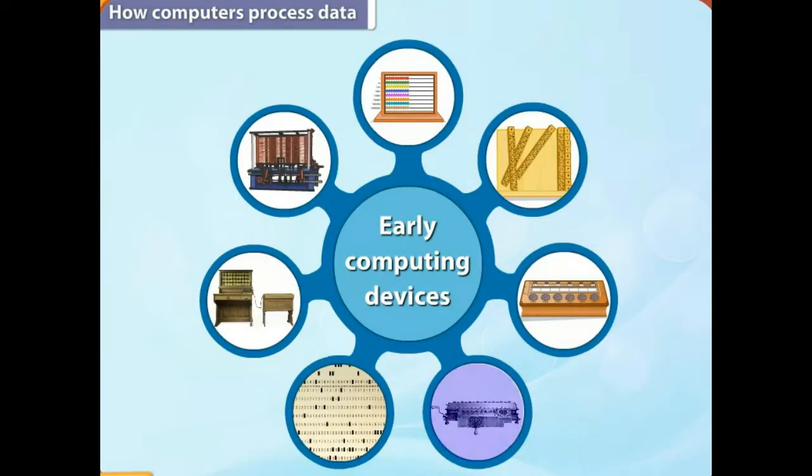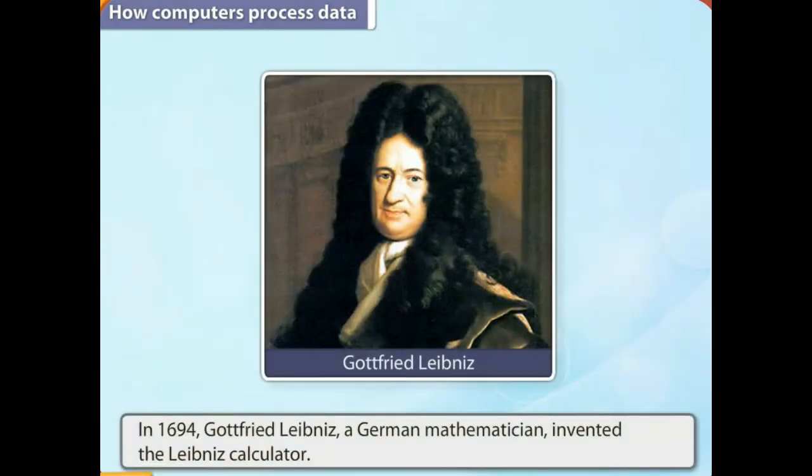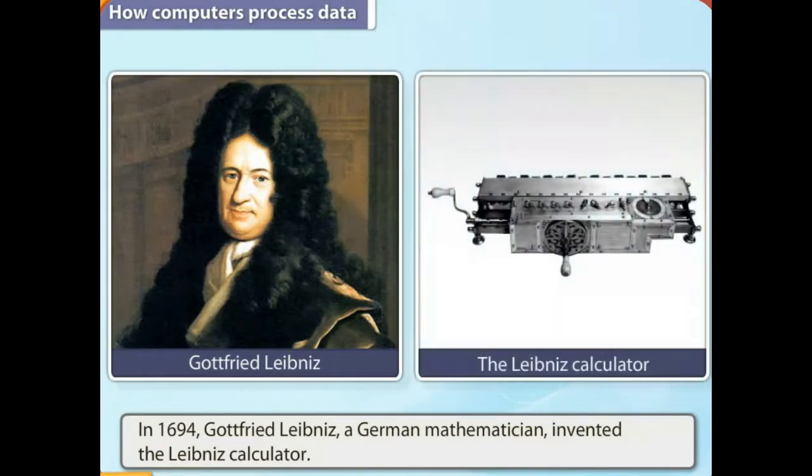The Leibniz calculator: In 1694, Gottfried Leibniz, a German mathematician, invented the Leibniz calculator. Unlike the previous machines, the Leibniz calculator could add and subtract numbers as well as multiply and divide using wheels. The Leibniz calculator was considered to be a breakthrough in advanced calculation.